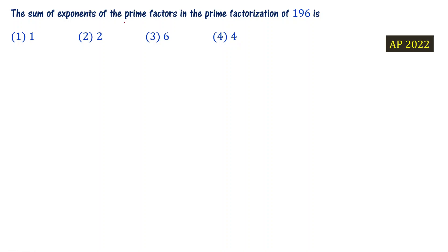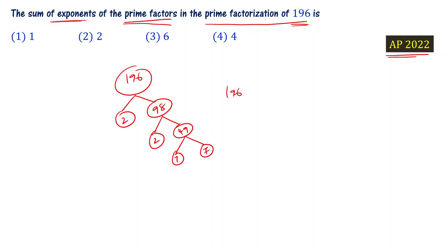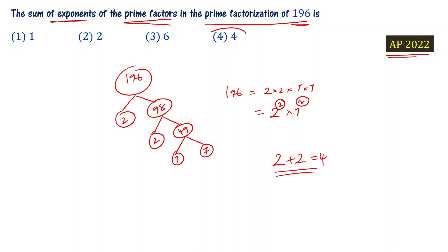The sum of the exponents of the prime factors in the prime factorization of 196. We can write 196 as 2×2×7×7, which is 2²×7². The exponents are 2 and 2. Sum of the exponents: 2+2 = 4. So choice 4 is the right answer.